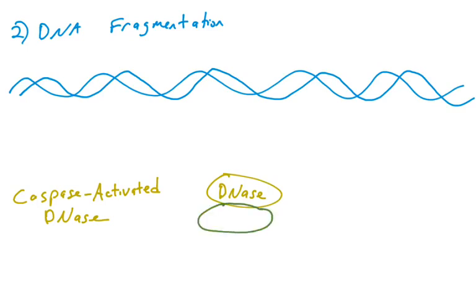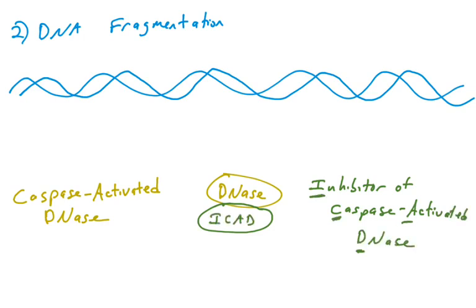For this DNase in particular, it has a binding partner, another protein that binds to it, that inhibits its activity. We're introducing another protein here called ICAD, which is the inhibitor of caspase-activated DNase. So in your cells, which are alive and happy and not undergoing apoptosis, the ICAD protein is bound to the DNase protein. In this way, the DNase protein is kept in an inactive state. It is not cleaving DNA.